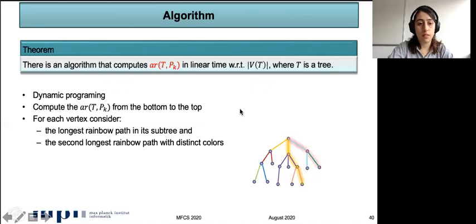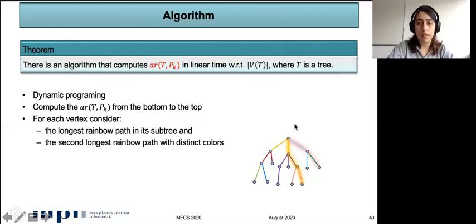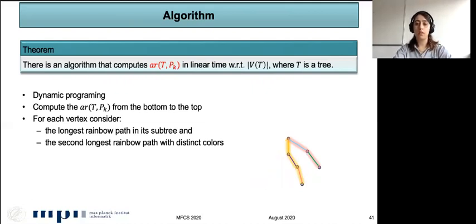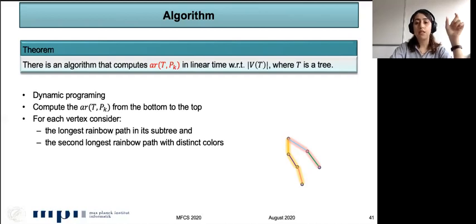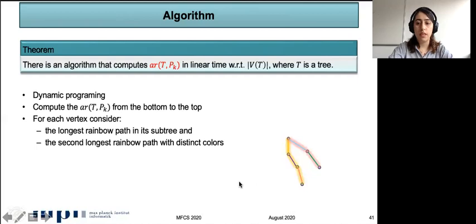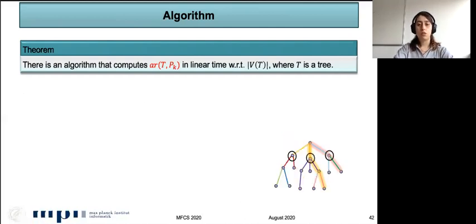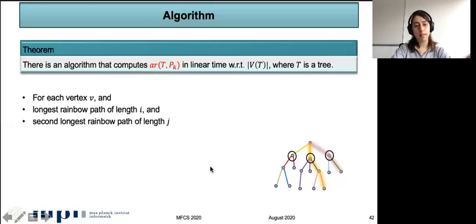We consider the second-longest rainbow path with distinct color from the first. We cannot consider a path as the second-longest rainbow path with distinct color if it shares a color with the first. We ignore all other edges, since it is sufficient to handle these two paths to avoid rainbow P_k. The key insight is that if we consider a vertex's parent and assign any color to the connecting edge, it makes at least one of these two rainbow paths longer. So we can consider K² states for each vertex with fixed path lengths.